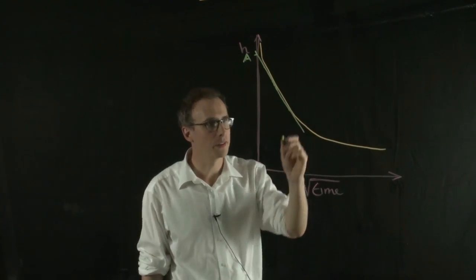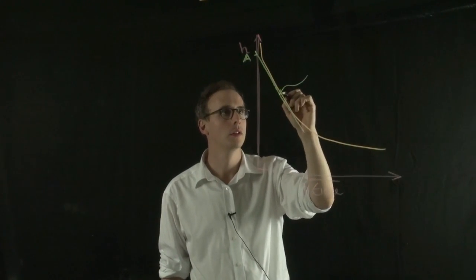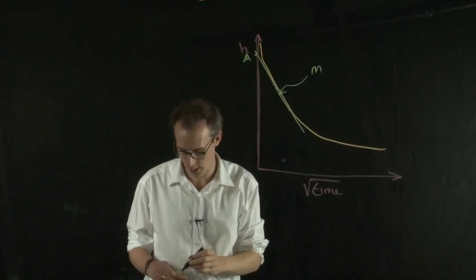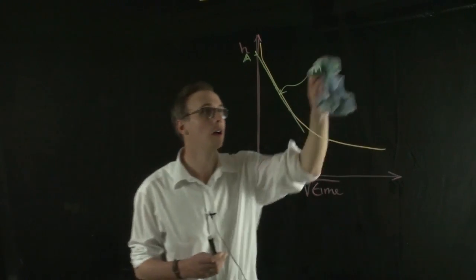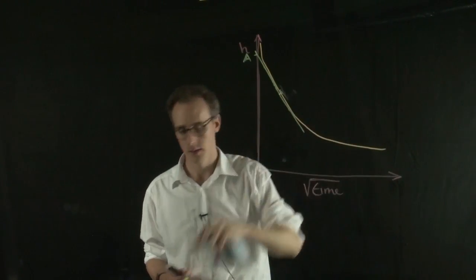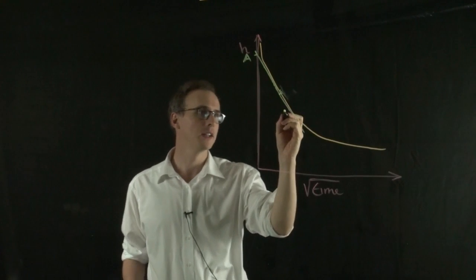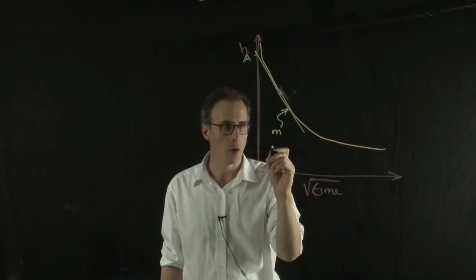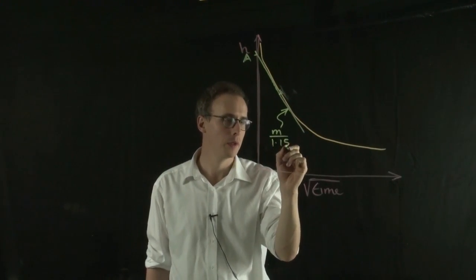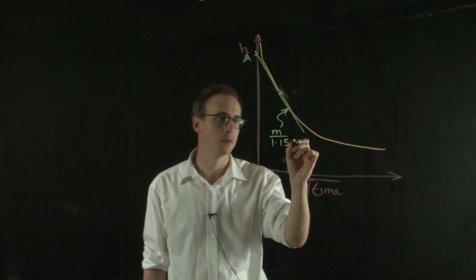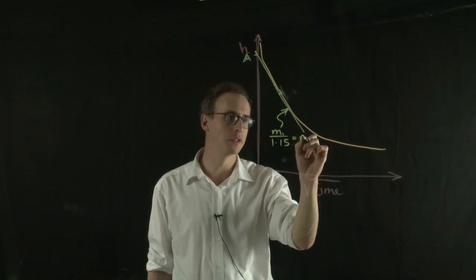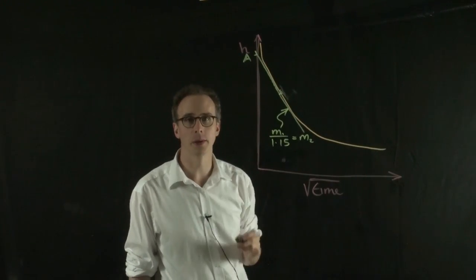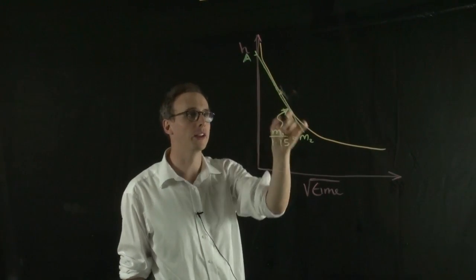So if I take the gradient of that line and I divide it by 1.15, I get a new gradient. Let's call this M1 and M2. So my new gradient M2 will be 1.15 times shallower than the gradient of this line.